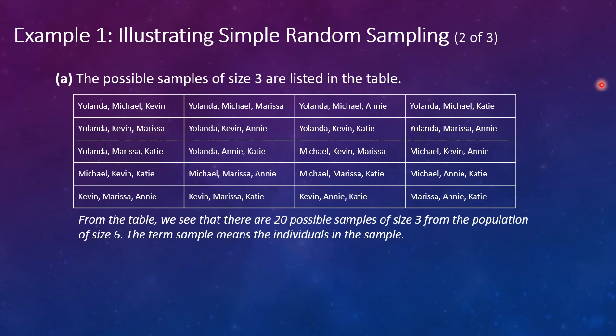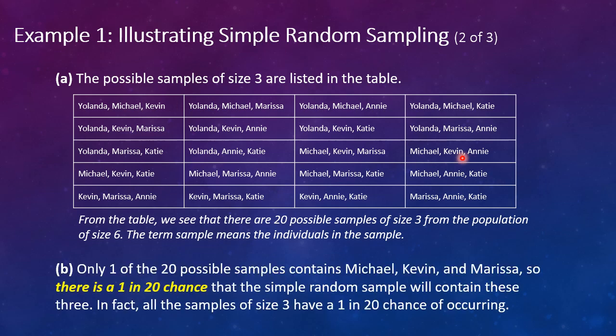And again, the term sample means the individuals in the sample. So this very first sample is Yolanda, Michael, and Kevin. Okay, so the second question was what was the likelihood of that specific sample? Well, since there are 20 total possible samples, and that is one case of the 20, that only one of the 20 contains Michael, Kevin, and Marissa, so there's a 1 in 20 chance that the simple random sample will pertain to these three. In fact, all samples of size three have a 1 in 20 chance, and that's what makes it a random sample because they're all equally likely to occur.